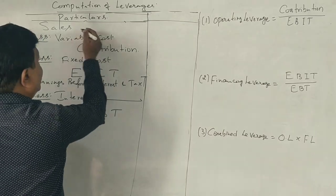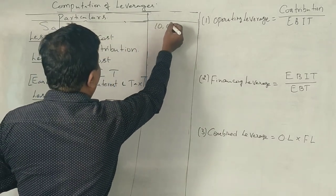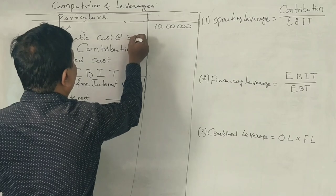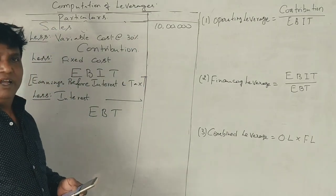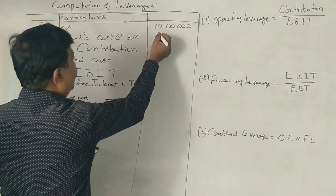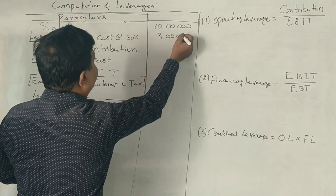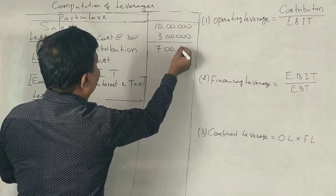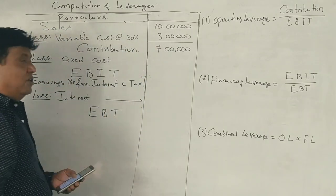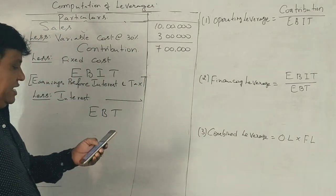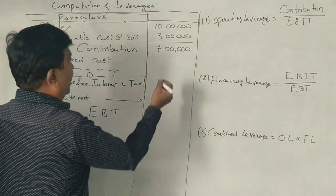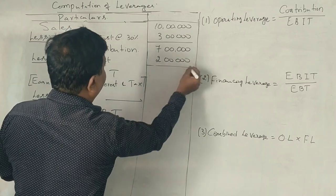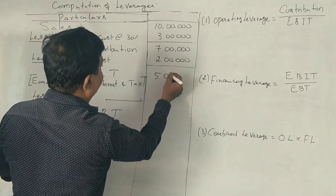The total sales given in the question is 10 lakhs. 30% of sales is your variable cost — 30% of 10 lakhs is 3 lakhs. So you get 7 lakhs as contribution. Fixed cost is given as 2 lakhs, and what is your EBIT? 5 lakhs.